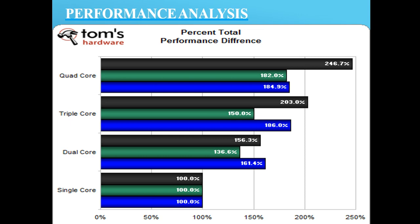In the single core we can see equal execution of about 100 percent across all categories. However, triple core and dual core processors are much faster than single core in any aspect. Triple core implements three directions quicker than dual core by 47, 14, and 25 percent respectively.